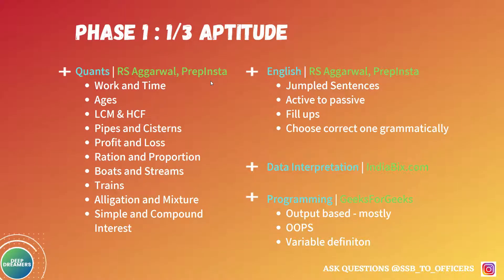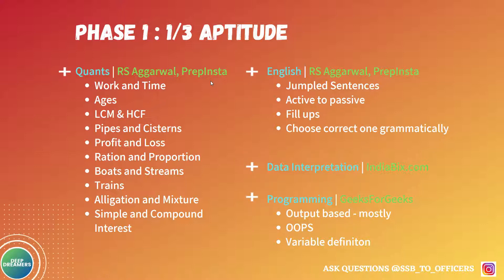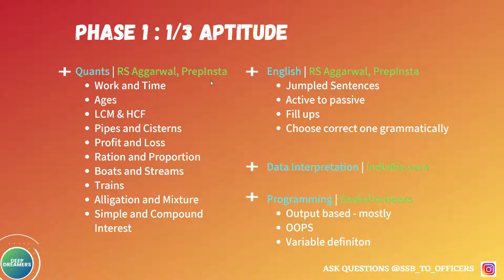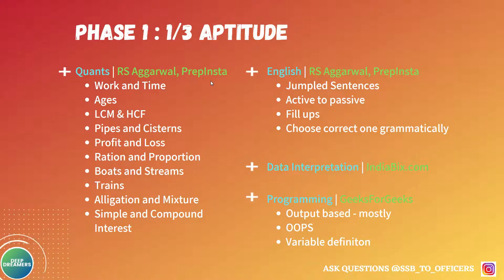For aptitude, you can prepare topics from RS Agarwal and PrepInsta, ordered by importance — solve 15 questions for each and you'll be set. For English, it is fairly easy; even if you don't prepare much, you'll solve most questions. For data interpretation, start with indiabix.com, then move to PrepInsta for ZS Associates level questions.